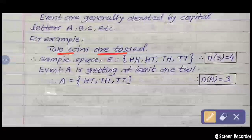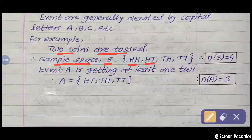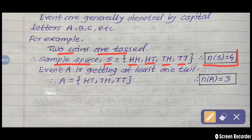Two coins are tossed. Therefore, sample space S is equal to: on both coins a result is obtained — head-head, or head-tail, or tail-head, or tail-tail. The number of sample points in this sample space, N of S, is equal to four.